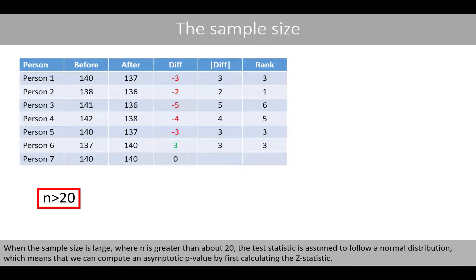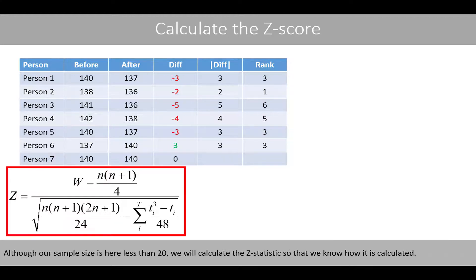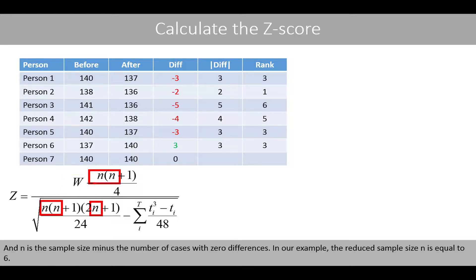When the sample size is large (n greater than 20), the test statistic is assumed to follow the normal distribution, and we can compute an asymptotic p-value by calculating the z-statistic. If the sample size is small, one can compute a p-value with an exact test. Although our sample size is less than 20, we calculate the z-statistic to illustrate how it is computed. W is our previously calculated test statistic, equal to 3.